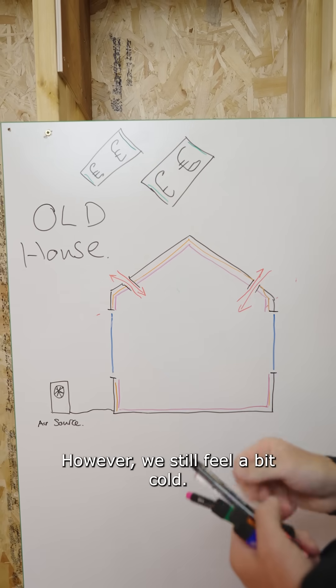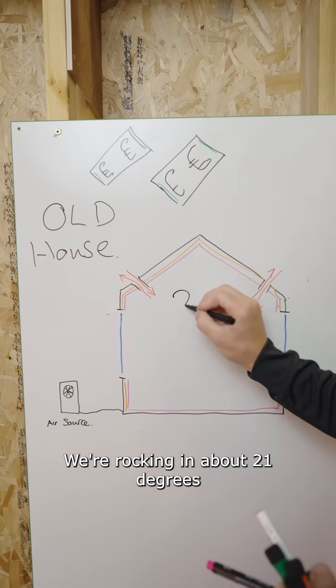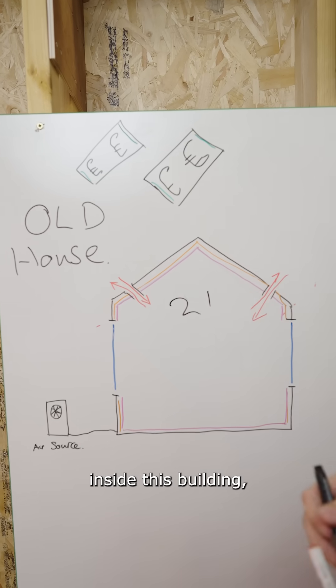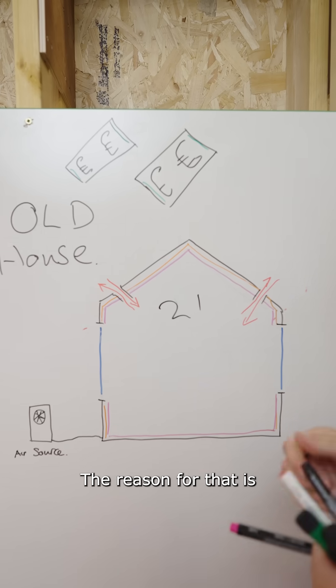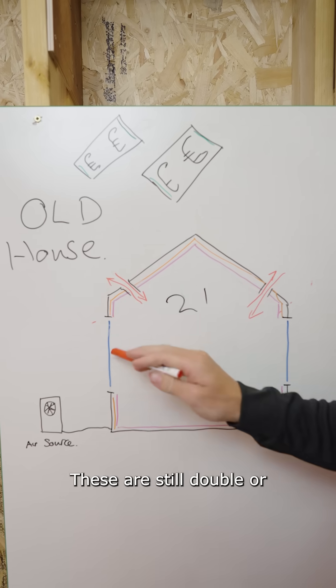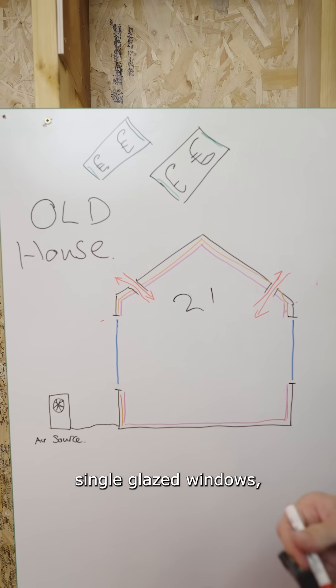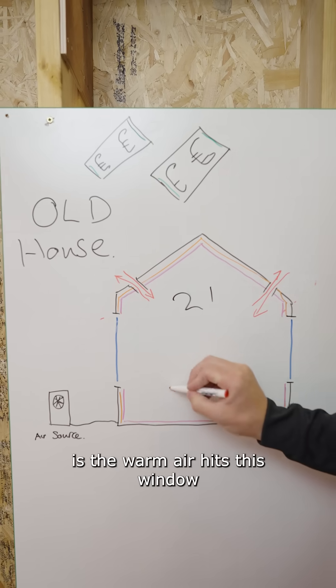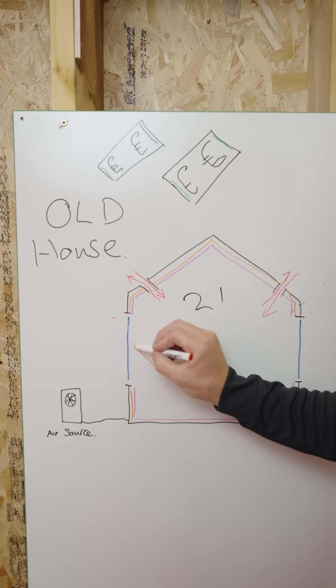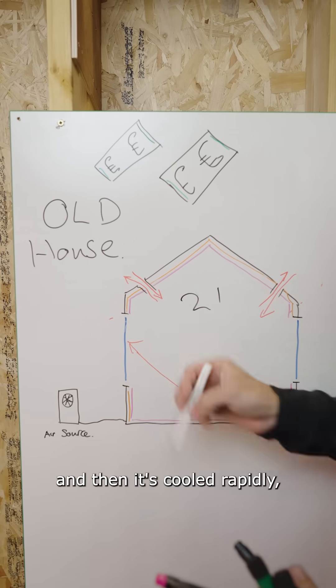We're at about 21 degrees inside this building, but it still feels cold. The reason for that is because we have our windows here. These are still double or single glazed windows, and they need upgrading. What happens is the warm air hits this window and then it's cooled rapidly.